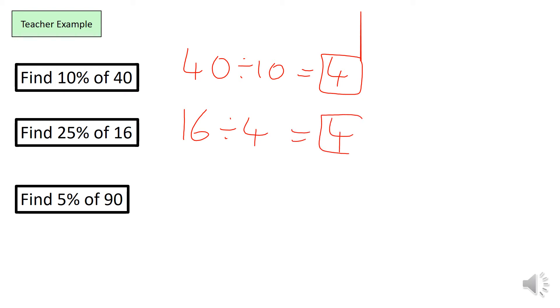That is our answer for this one. To find 5% of 90, I can find 10% and then divide that by 2. And that gives me 5%. So to find 10%, I divide it by 10. 90 divided by 10 equals 9. And now I'm going to take the 9 and divide it by 2. And that gives me 4.5.